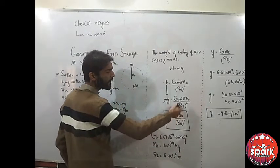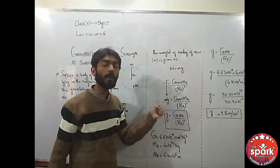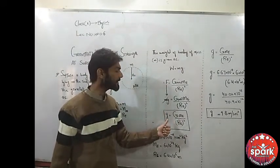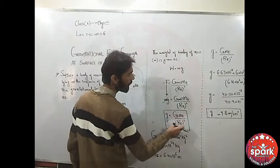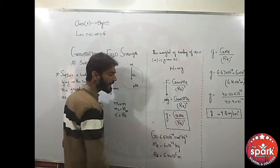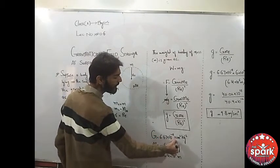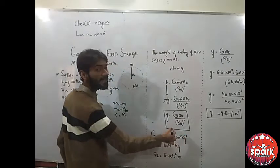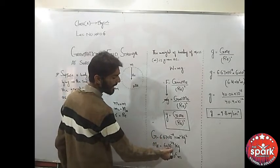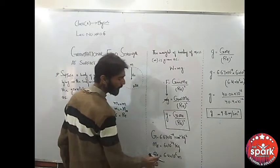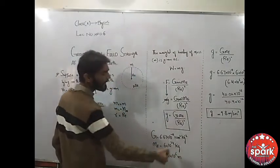This is the formula for gravitational field strength: g = G*Me/Re². G is the universal gravitational constant with value 6.67×10^-11 N·m²/kg² in SI system. Mass of Earth is 6×10^24 kg, and radius of Earth is 6.4×10^6 meters.